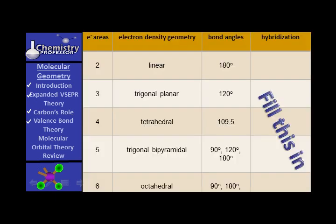Let's fill in the chart. When we have two areas of electron density, the geometry is linear, the bond angles are 180 degrees, and the hybridization involved is SP hybridization.